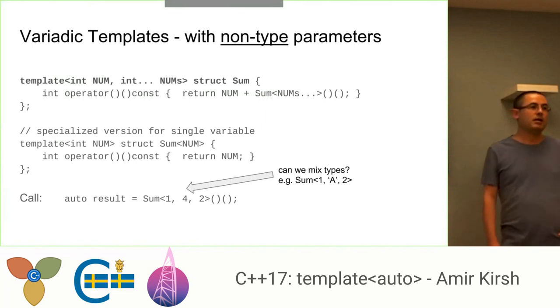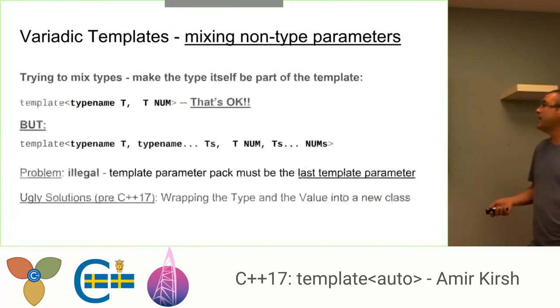And then in the way that we use usually for variadic templates, we have the single case, in case I have only one number, and the multiple case. And at the end I can call sum with the template parameters and have the sum of one for two in this example. And now the question is, can I mix types? Can I send here into sum, into the template parameters of sum, different types? Like for example, one and 'a' and two. And in this example I'm using char and not floating points, because floating point and double are not legitimate as a template non-type parameter, but char is. So can I do that?